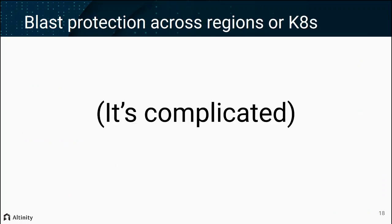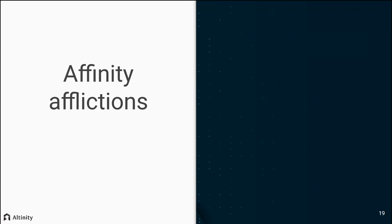When talking about blast protection across regions or Kubernetes clusters — dealing with things like the loss of a Kubernetes cluster or the loss of a region — this is no longer just a data problem but more a question of losing IT resources entirely. It's much more of an exercise for the reader that doesn't just include data, but includes things like how do we handle networking and DNS. That's really beyond the scope of this talk. What I'm going to do is proceed to another kind of data loss directly related to Kubernetes itself — what I call affinity afflictions.